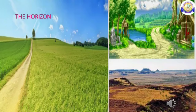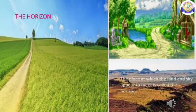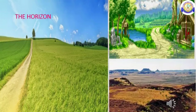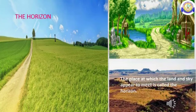The horizon: If you stand on an open ground and look at a far off place, the land and sky seem to meet. But in reality, they do not meet. The place at which the land and sky appear to meet is called the horizon.